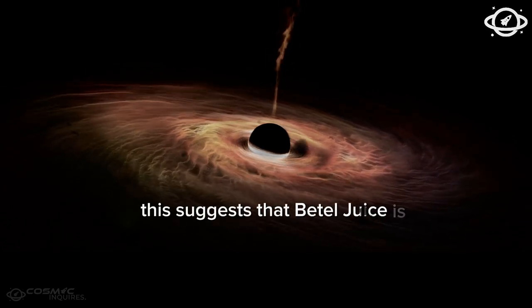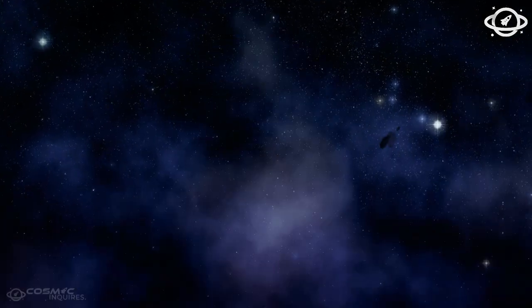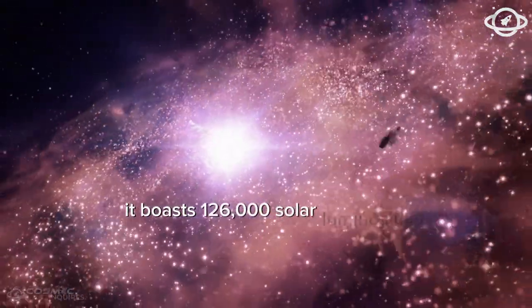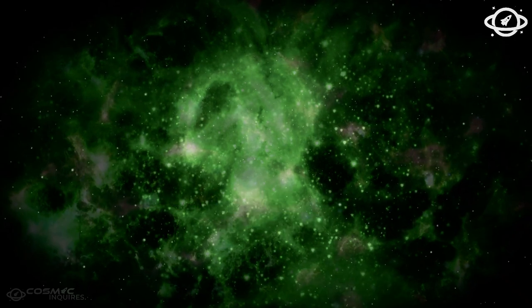This suggests that Betelgeuse is 16,128 times more massive than the sun. It boasts 126,000 solar luminosities and has a surface temperature of around 3,600 Kelvin, cooler than the sun.